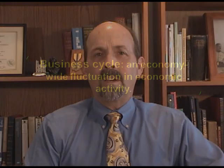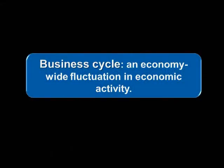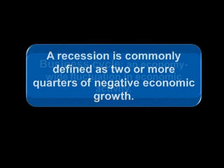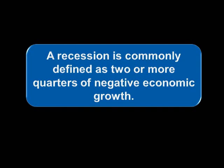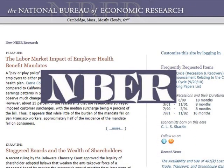The business cycle is the economy-wide fluctuation in economic activity that occurs irregularly over time. The most dramatic part of a business cycle is a recession, which is popularly defined as two or more consecutive quarters of negative economic growth. However, the official determination of when recessions begin and end is made by the Business Cycle Dating Committee of the National Bureau of Economic Research, which considers a variety of economic indicators including GDP growth, employment, and wholesale and retail trade.